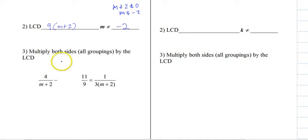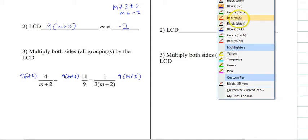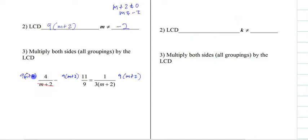And as we multiply it, what it's going to do is be distributed. So we're going to put a 9m plus 2 here, a 9m plus 2 here, and a 9m plus 2 on the other side of the equation as well. And now that we've done that, this should remove all of our fractions.